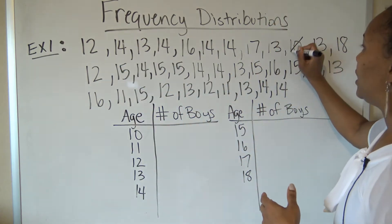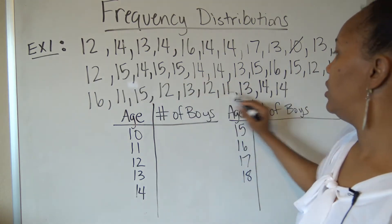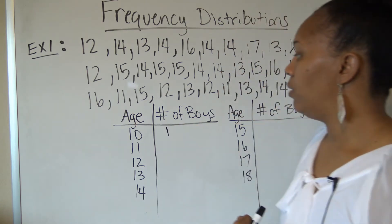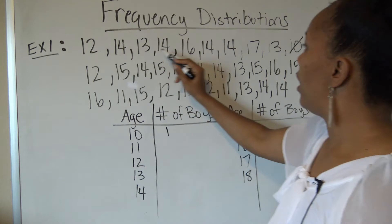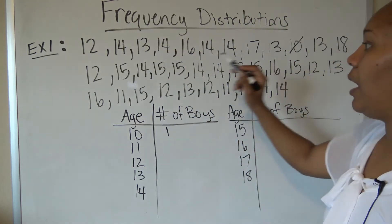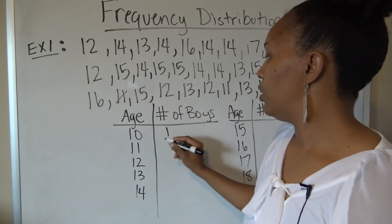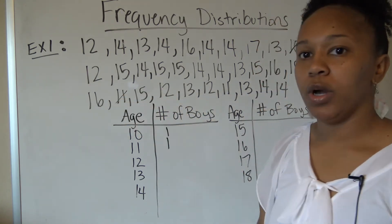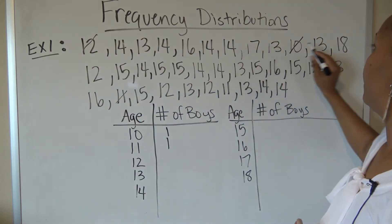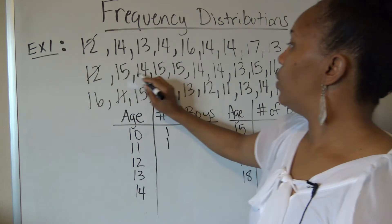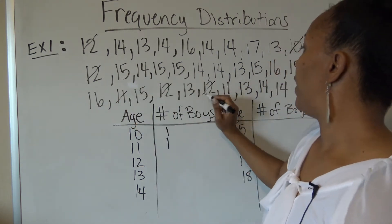Looking for 10s: I find one 10 and no others, so the frequency is 1. Now looking for 11s: there are none in the top row, none in the second row, but there is one 11 in the third row, so I'll mark that as 1. Now looking for 12s: 1, 2, 3, 4, 5 — there are 5 twelves, so I'll put 5 there.